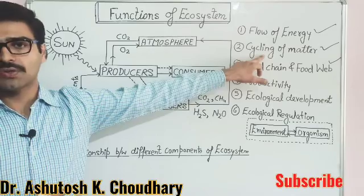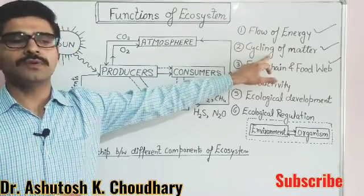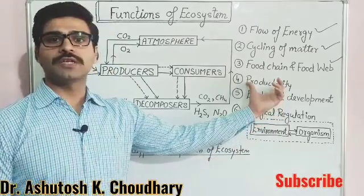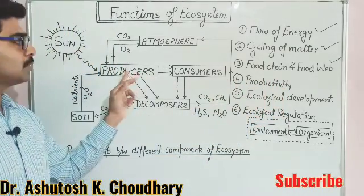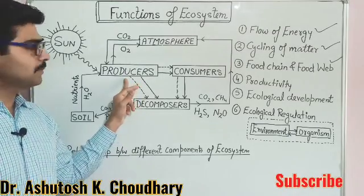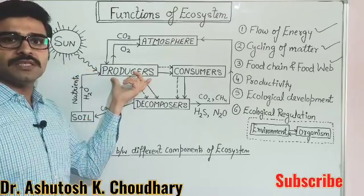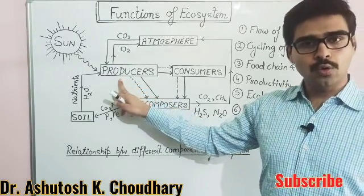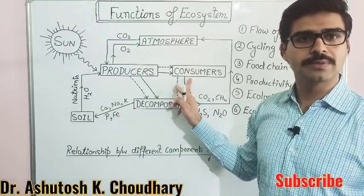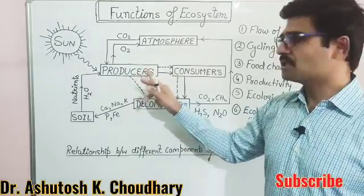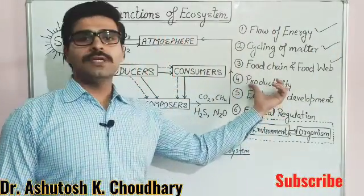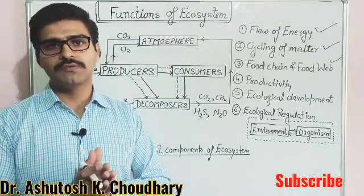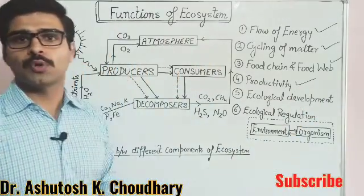So the functions of the ecosystem so far are: flow of energy, cycling of matter, food chain, and food web. The next function of the ecosystem is productivity. Productivity means the production of food by producers. With the help of sun's energy, producers produce food for their own growth and for the growth of other animals — consumers. This phenomenon is known as productivity. Productivity may be net productivity or gross productivity, which will be explained in detail later.